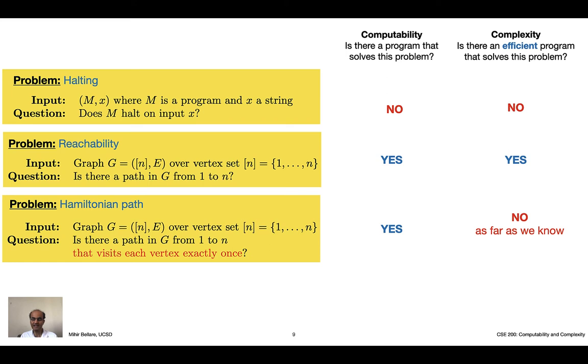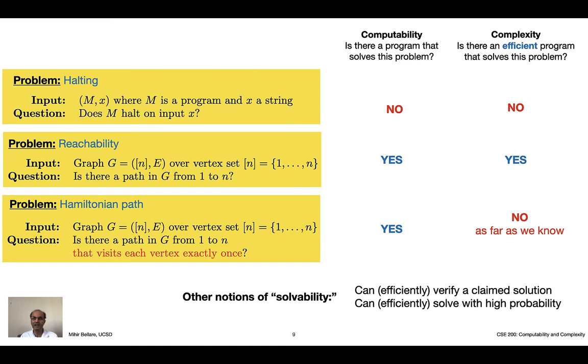A caveat to that is that, unlike where for halting I can prove that there's no program, I can't prove that there's no fast algorithm for Hamiltonian path. It's just that we kind of think there isn't. Broadly speaking, this is the kind of domain that the class is going to explore. It's going to define these notions, look at different problems, and as part of that, also expand on what we mean by solvability to go beyond simply writing programs that give you yes or no answers to the problem, but try to do other things. For example, verify claimed solutions rather than find them from scratch, or relax solvability to only be true with high probability.